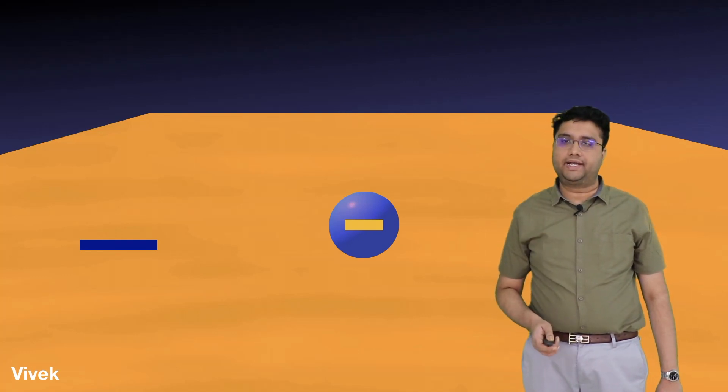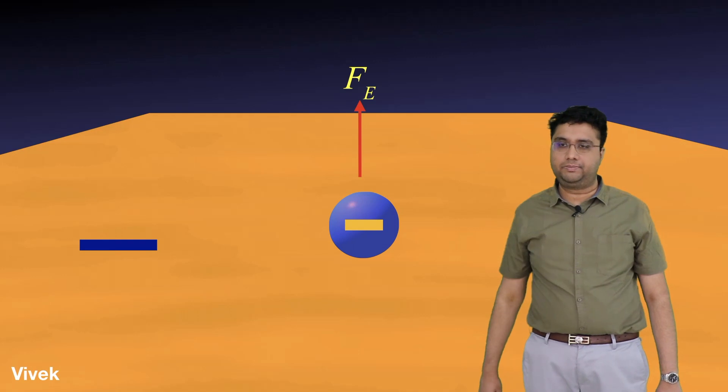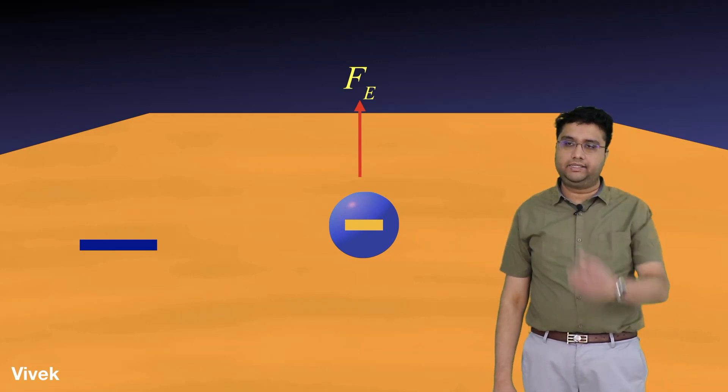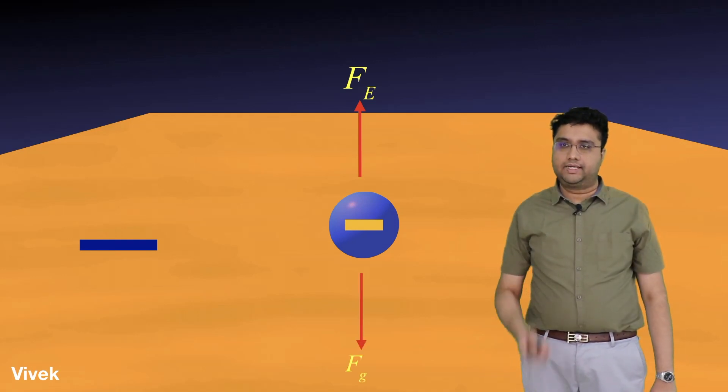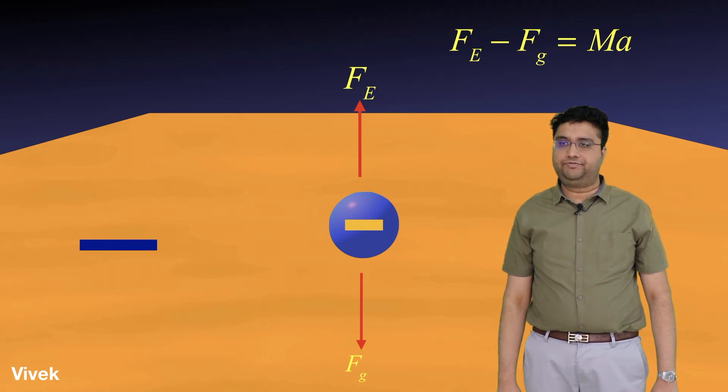The question is what should be the surface charge density after charging the plane so that the object acquires different acceleration. Now let's see the force diagram. This is the object. The electrostatic repulsion force is acting in upward direction. Gravitational force on the object due to its mass is acting in the downward direction. So the resultant force F_E minus F_g is mass into acceleration. It's a very simple case.